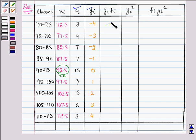Then we need to multiply Fi and Yi, and we will get minus 12, again minus 12, minus 14, minus 7, 0, 9, 12, 18, again 12.